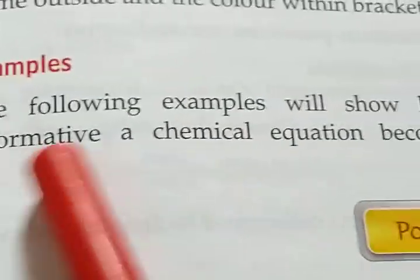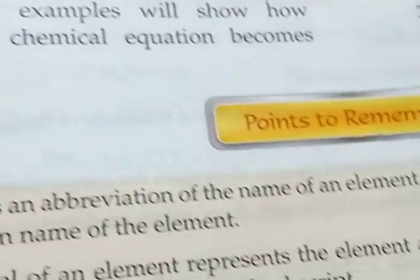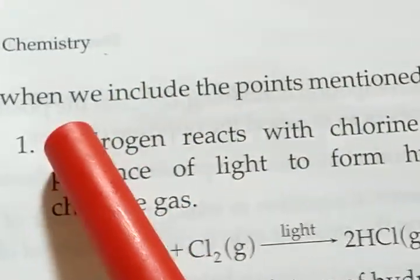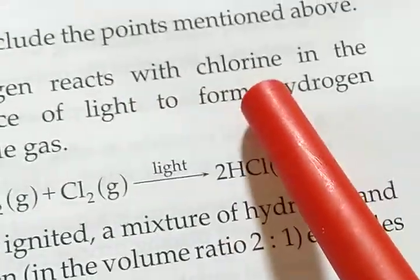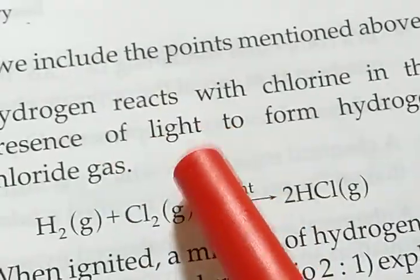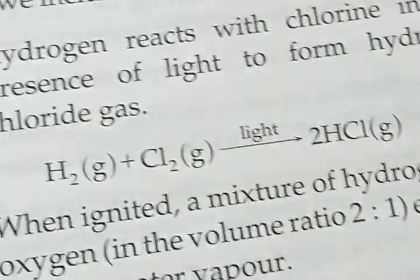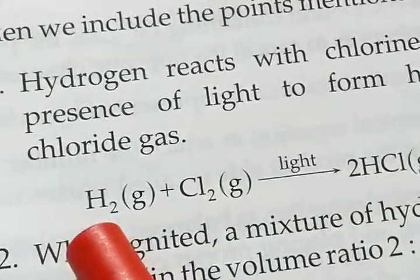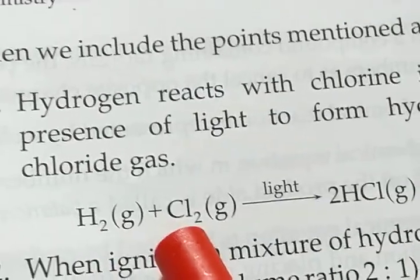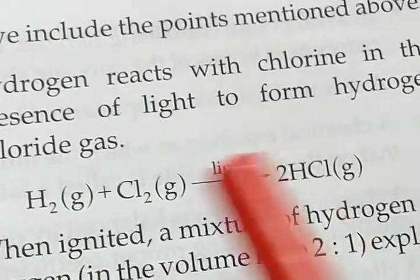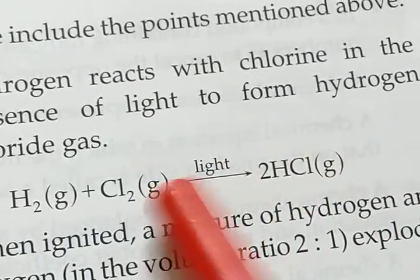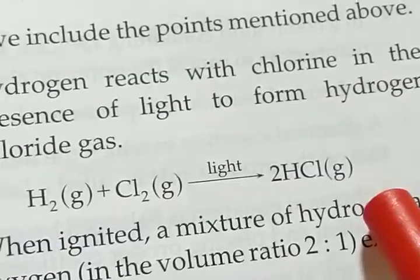Examples. The following examples will show how informative a chemical equation becomes when we include the points mentioned above. Hydrogen reacts with chlorine in the presence of light to form hydrogen chloride gas. So we have to write in this way: hydrogen that is gas, chlorine as well as gas. So we have to write in the bracket their state. Light, it is a condition, we have to write down before the arrow. Same way 2HCl, that is gas.